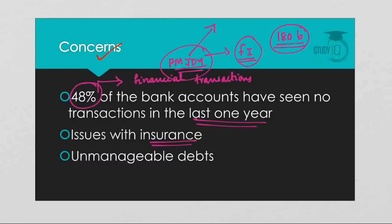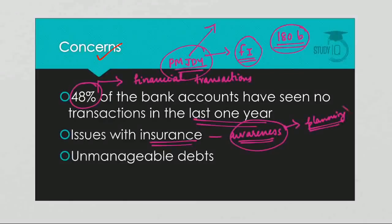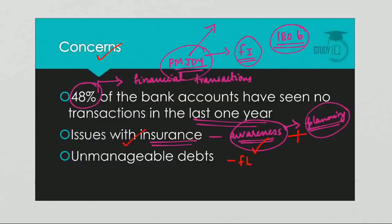There are also issues related to insurance. There is a lack of proper awareness among the masses regarding insurance products, and because of this, people buy insurance policies without adequate planning and many give them up midway. From the insurance providers' side, they push products without adequately assessing the consistency and income level of buyers. Additionally, consumers who lack financial literacy pile up unmanageable debts and end up paying higher interest on loans. All these problems stem from a lack of financial literacy.